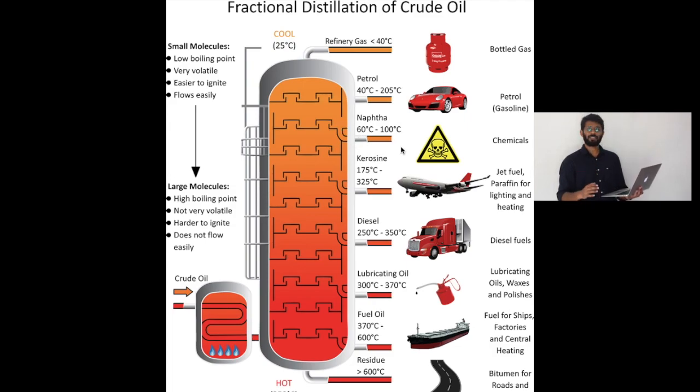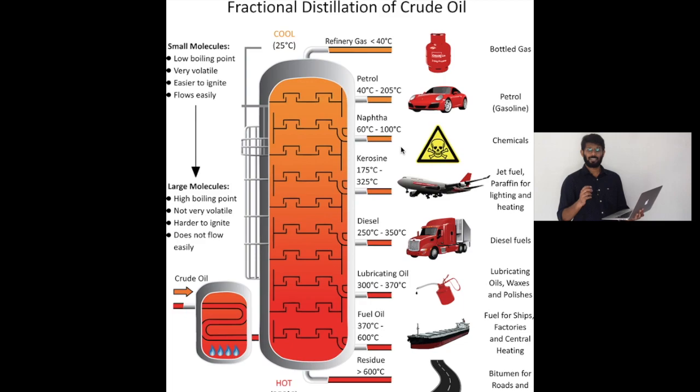We also get naphtha. Naphtha is the main input of the petrochemical industry, and is used to produce plastic, fertilizers, and pesticides.